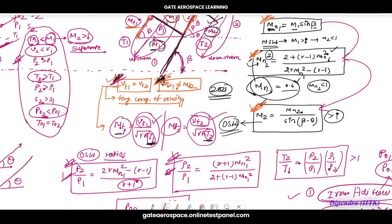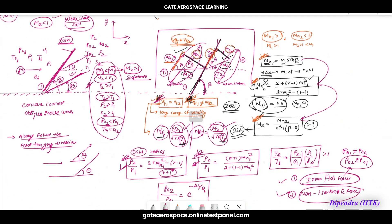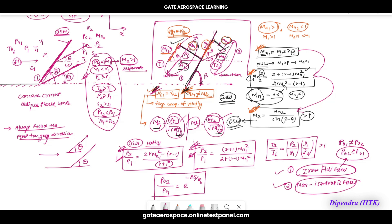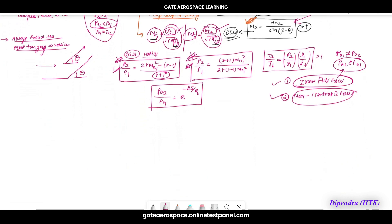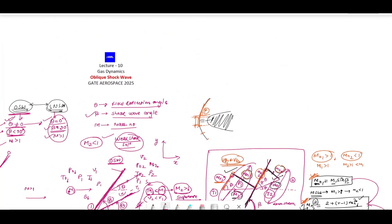We've seen what an oblique shock wave is, how it is formed, and how to analyze it using trigonometry and velocity components. We'll next see how to use these equations to solve numerical problems and capture all components of the oblique shock wave. In the next lecture, we'll start with moving normal shock wave, then see the theta-beta-M relation, which is very important for understanding oblique shock waves in detail — many GATE questions come from it.